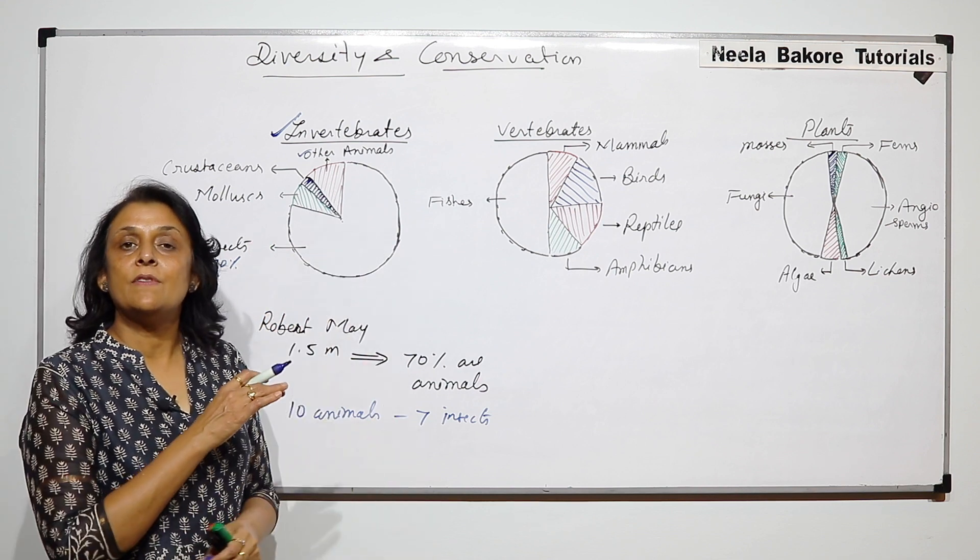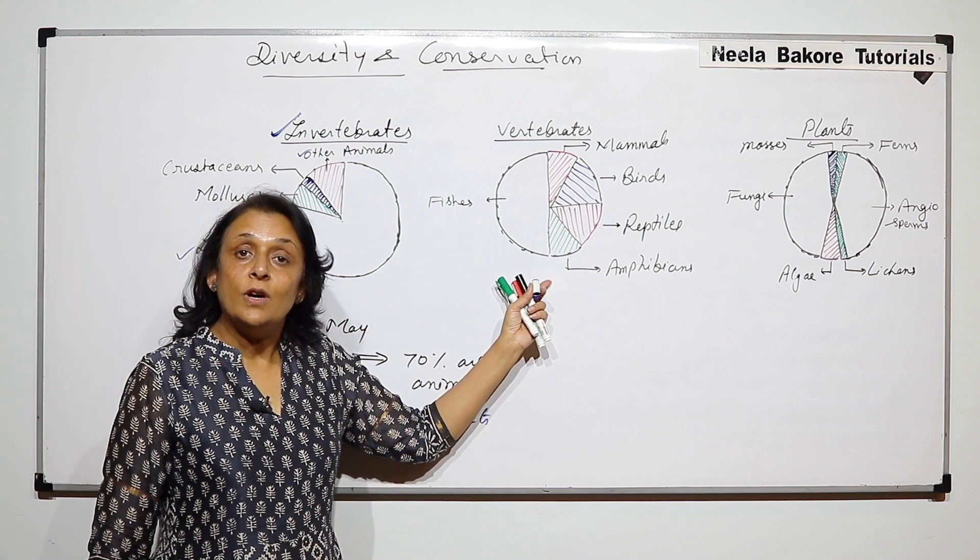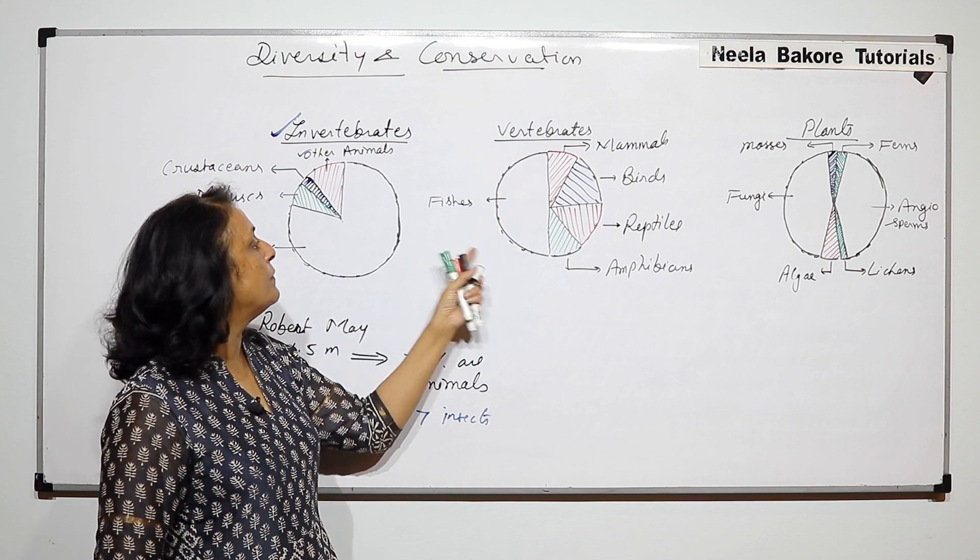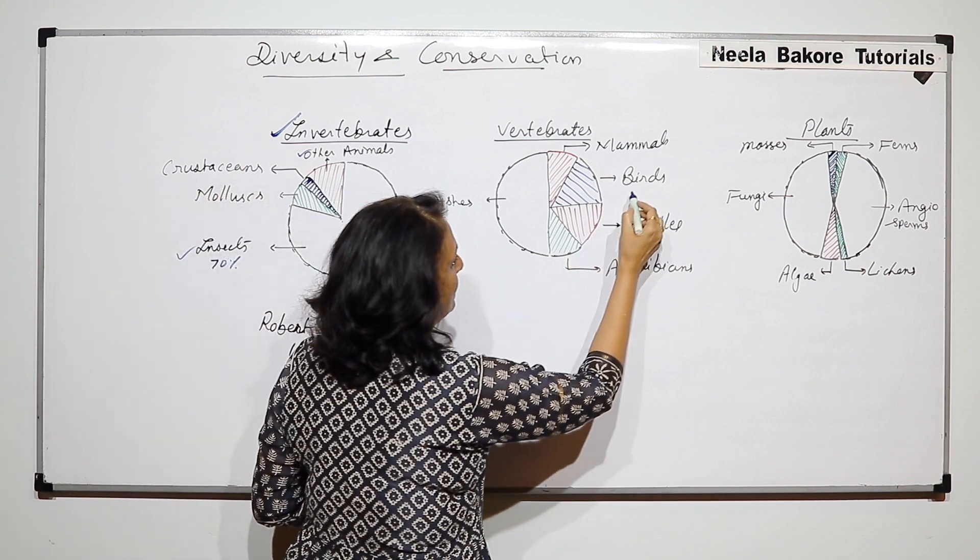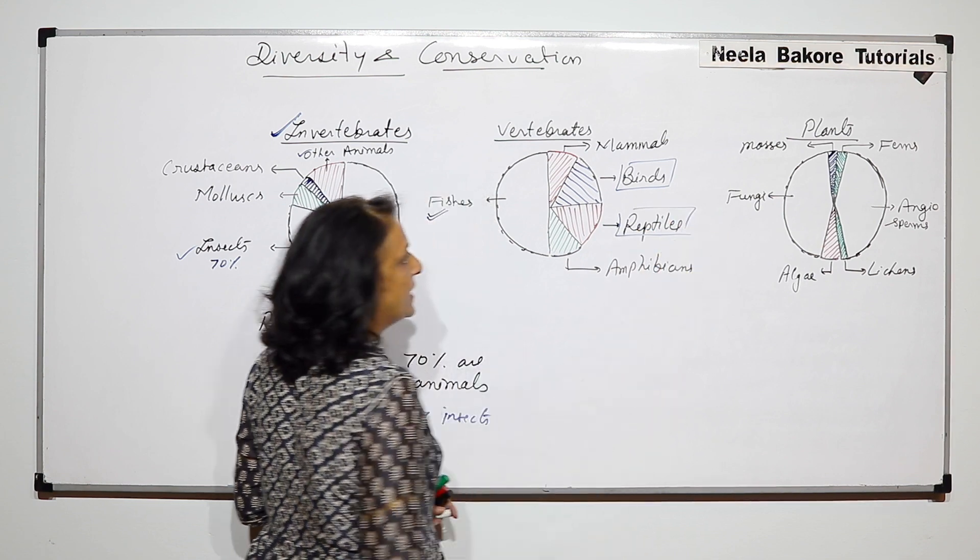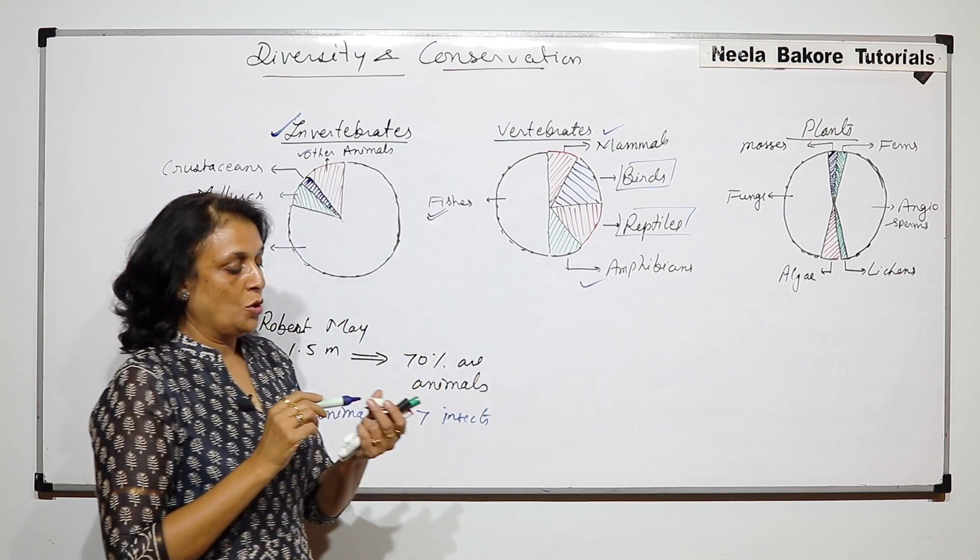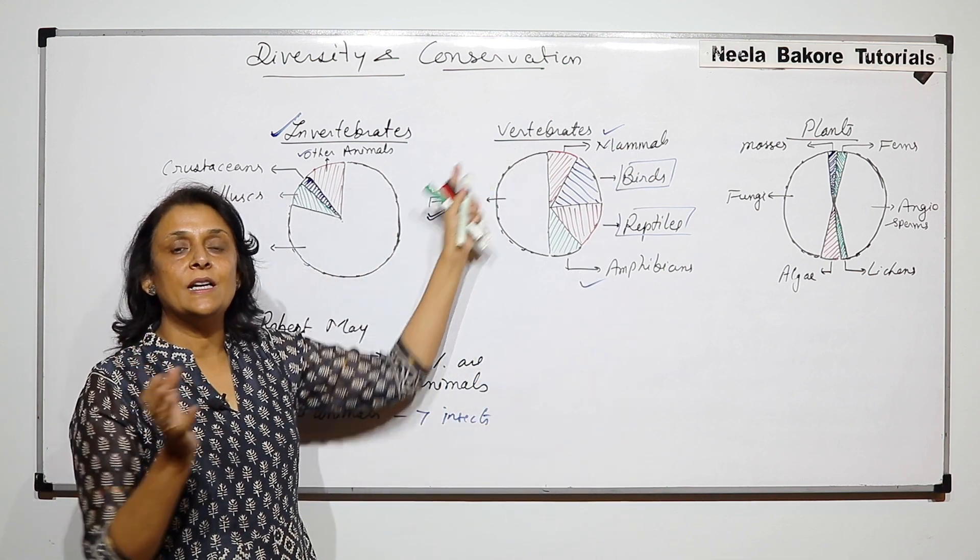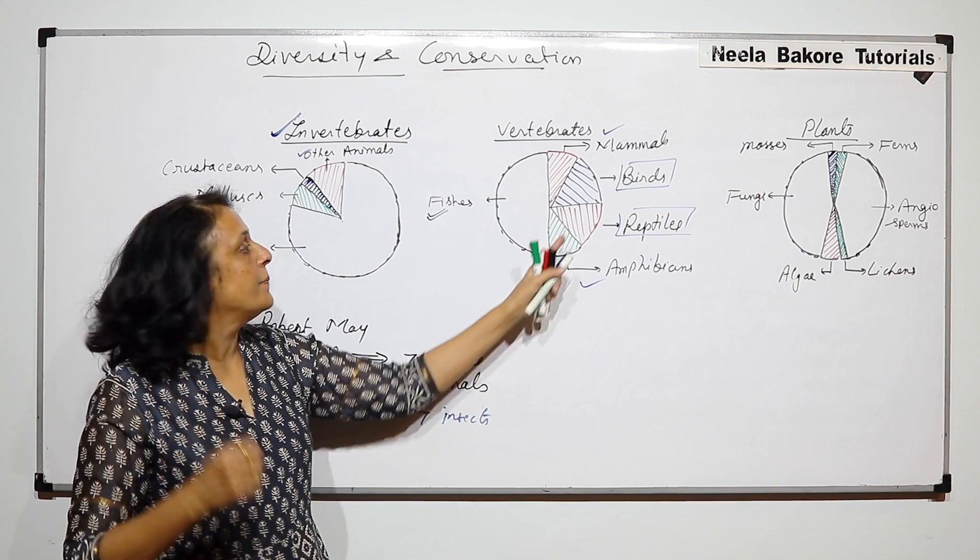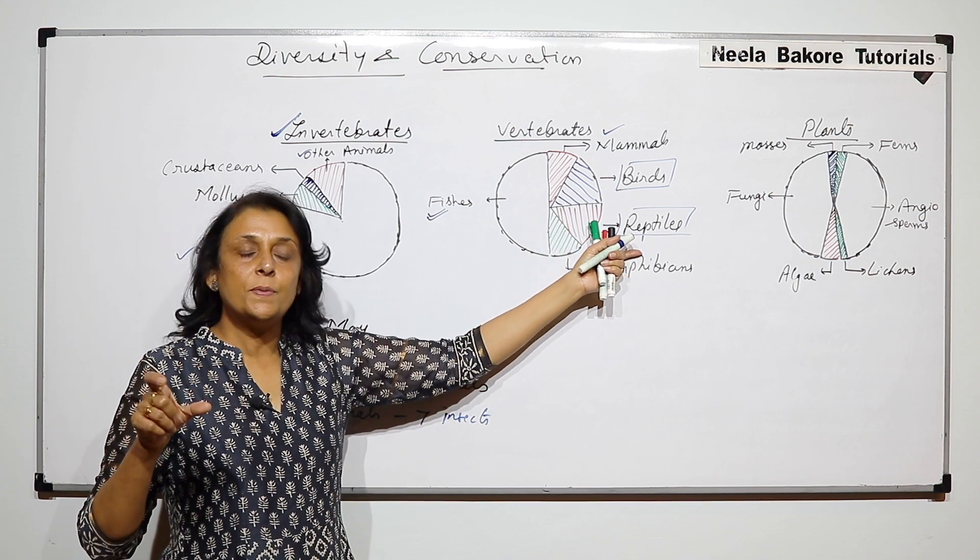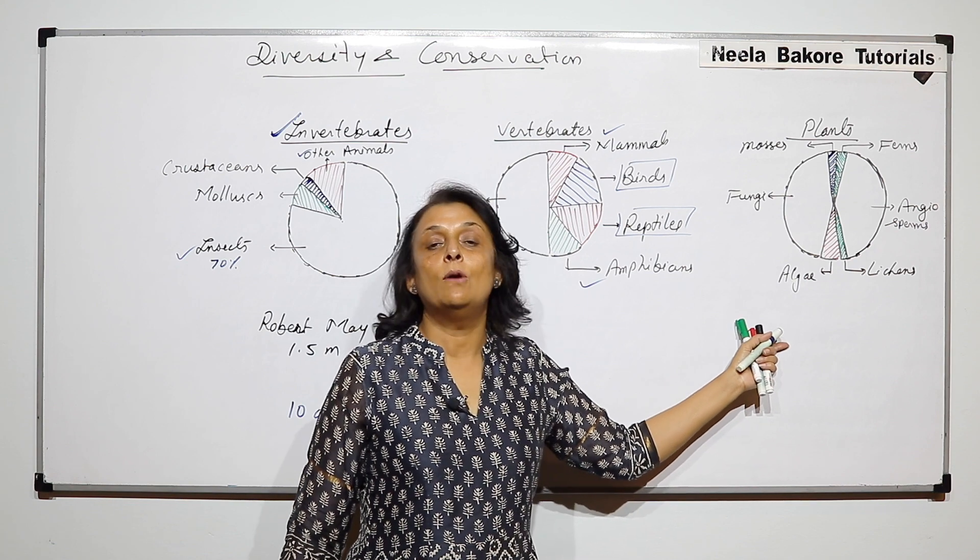In this other animals, we have all other categories of invertebrates. If we talk about vertebrates, this is again only one group. Maximum number is of fishes. Birds and reptiles are pretty much the same percentage. And after that are mammals and amphibians. So about 50% of the vertebrates are fishes, and then the remaining 50% have birds and reptiles with the bigger percentage as compared to amphibians and mammals.